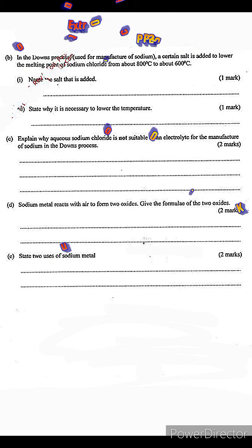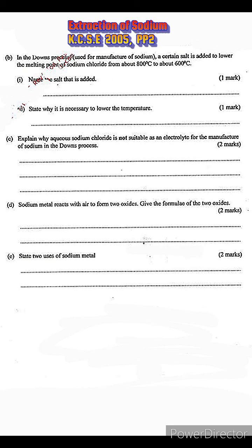Part b: in the Downs process, a certain salt is added to lower the melting point of sodium chloride from about 800 degrees Celsius to about 600 degrees Celsius. Name the salt that is added. The salt is calcium chloride.